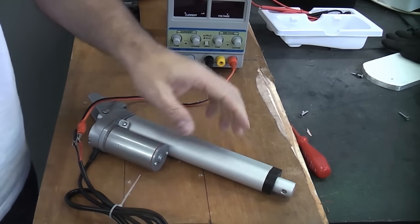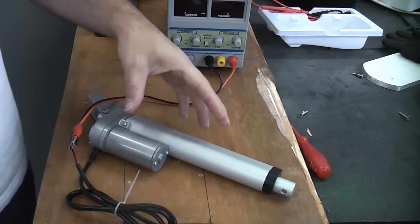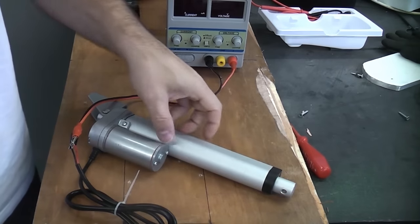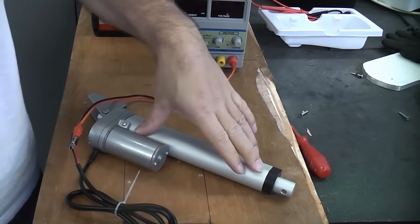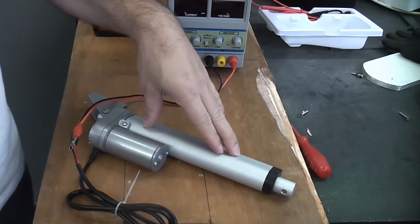This particular one is a 12 volt DC. These are very useful if you're making something at home and you need it to be powered. This particular one can push something like 170 pounds of force, so they are incredibly strong for the size and for the voltage.